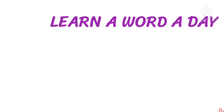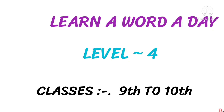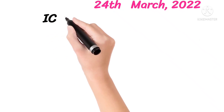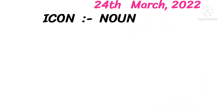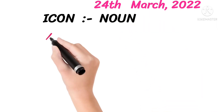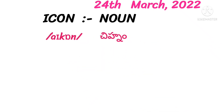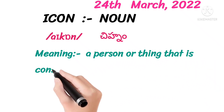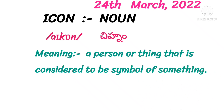Learn A Word A Day, Level 4, Classes 9th to 10th. 24th March 2022. Today's word is Icon. Parts of speech: Noun. This is the phonetic script. Telugu meaning: A person or thing that is considered to be a symbol of something.